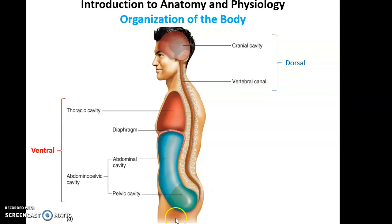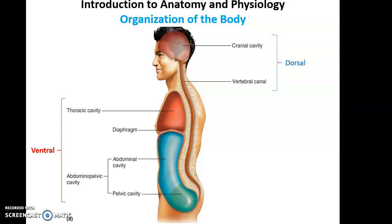The abdominal pelvic cavity is broken up into the abdominal cavity, where we find most of the small and large intestines, the liver, the pancreas, the gallbladder, the stomach, and some other important structures.